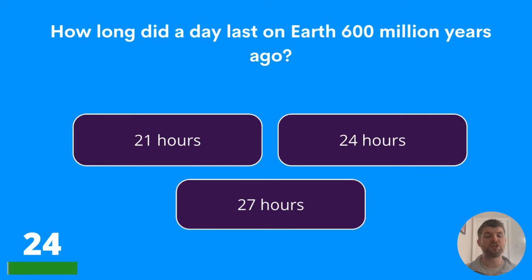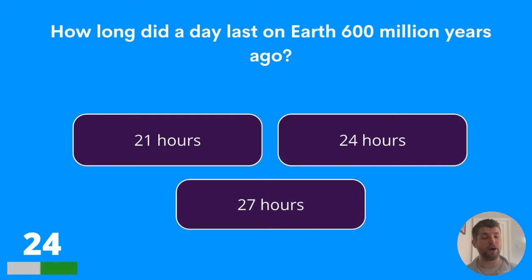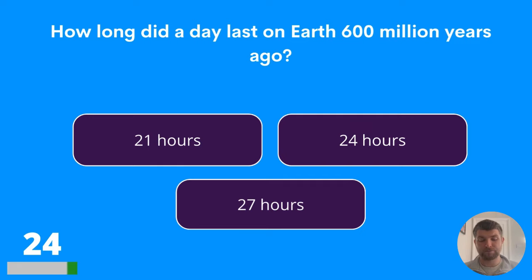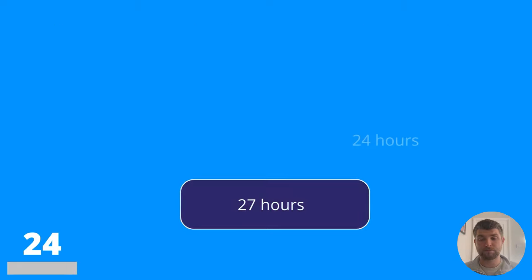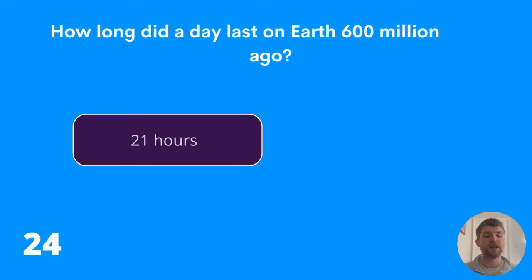Question twenty-four: how long did a day last on earth 600 million years ago? Twenty-one hours, twenty-four hours, or twenty-seven hours? The answer is twenty-one hours.